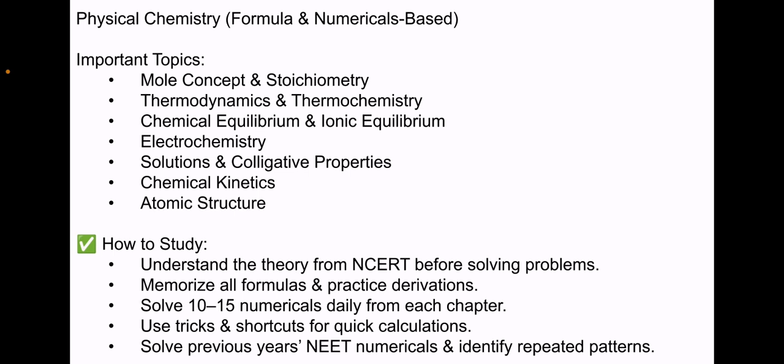What you will do is understand the theory from NCERT before solving any problems, then memorize all the formulas and practice the derivations. I suggest you make a separate chart for all the formulas of physical chemistry. Then you have to solve 10-15 numericals daily from each chapter. Use tricks and shortcuts for quick calculations. As I already told you, numericals are being asked from this portion. You can solve the NEET PYQs and identify the repeated patterns.